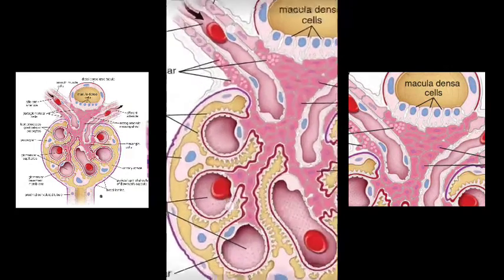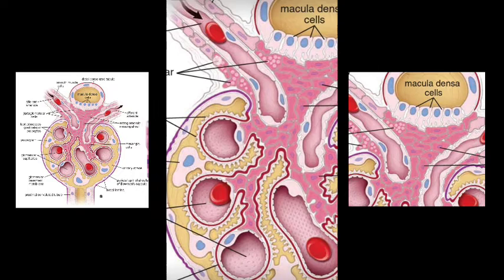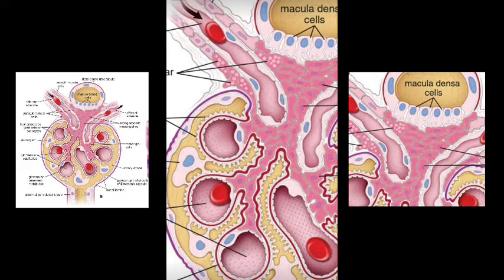The juxtaglomerular cells are specially differentiated cells in the smooth muscle of the afferent arteriole, close to the glomerulus. It is not the endothelium but the smooth muscle of the afferent arteriole adjacent to the glomerulus. In this region, the muscle cells of the wall are modified — they are large, rounded, somewhat enlarged, with an epithelial shape and spherical nuclei. The cytoplasm of these juxtaglomerular cells contains numerous granules which may contain renin, seen by electron microscopy.